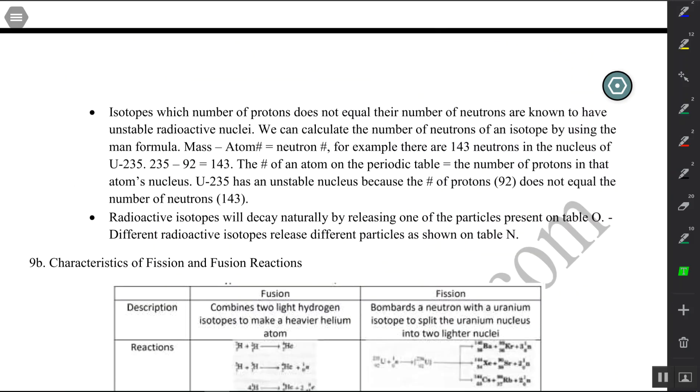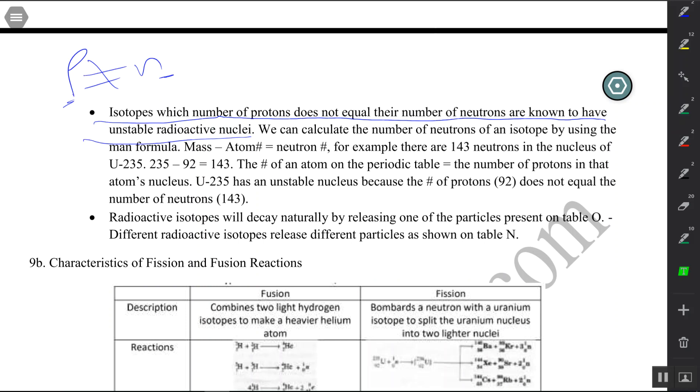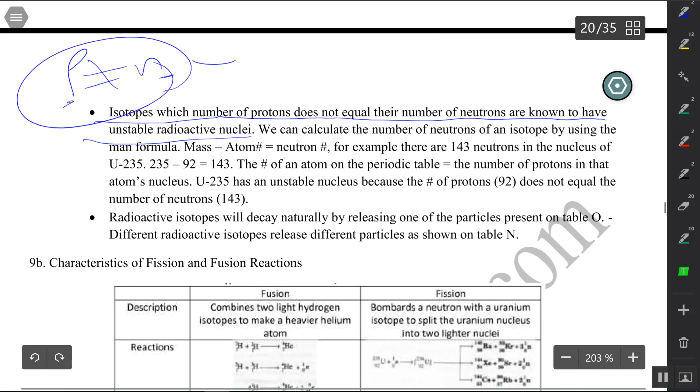Moving on. Isotopes which number of protons does not equal their number of neutrons are known as unstable radioactive nuclei. If the protons do not equal the number of neutrons, you have an unstable nucleus. And if this nucleus is unstable, what's it going to do? It's going to decay.